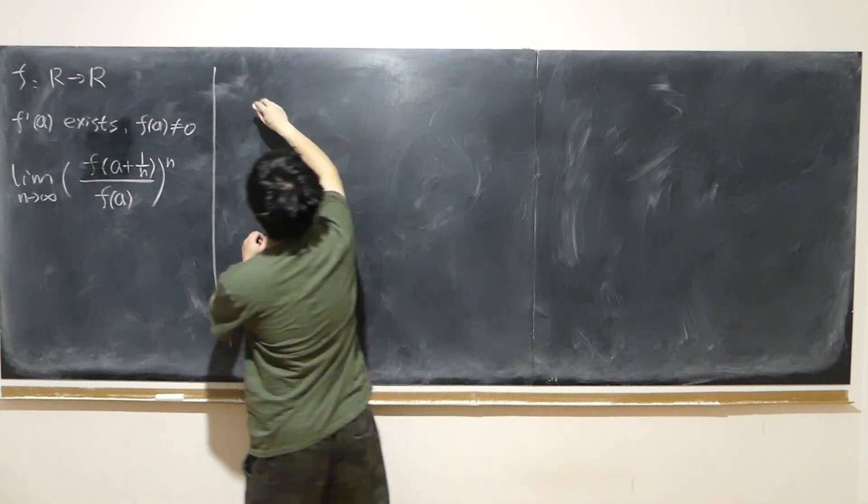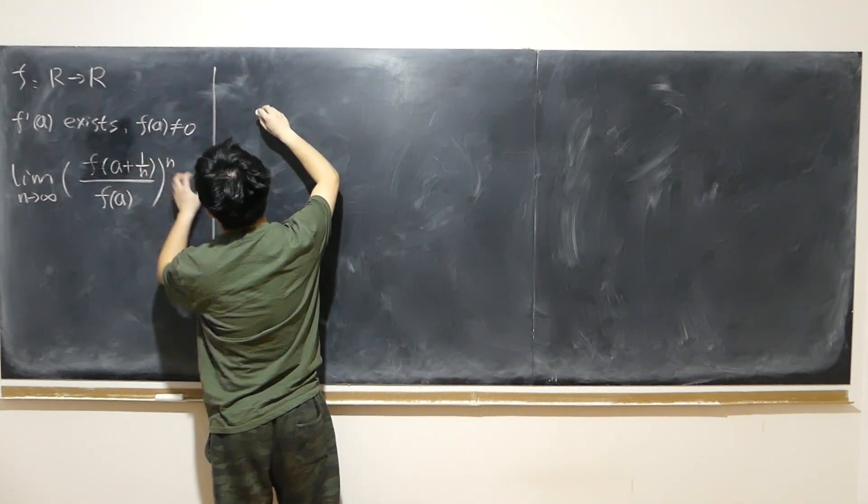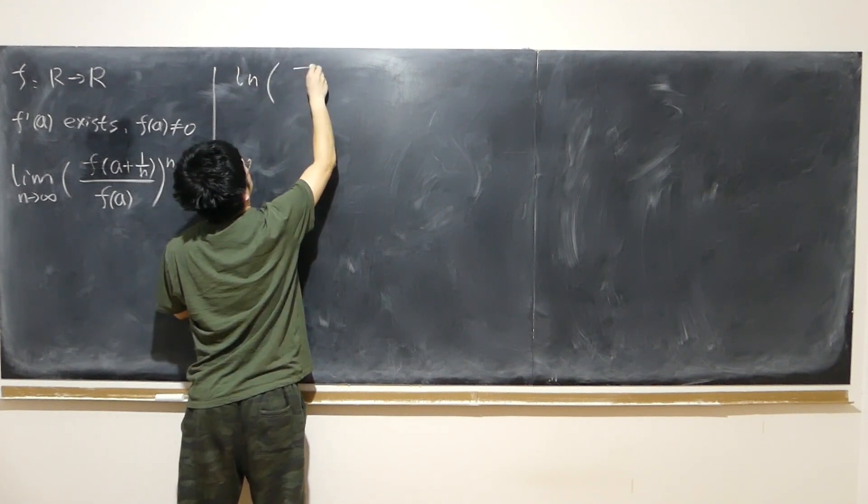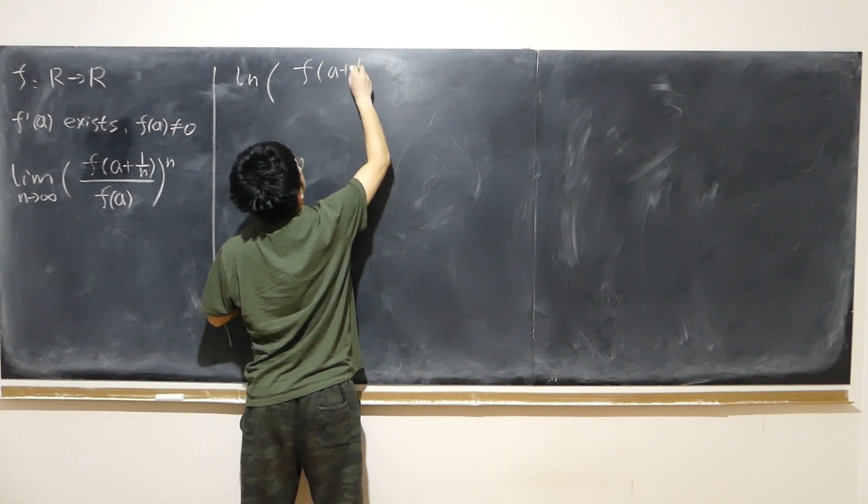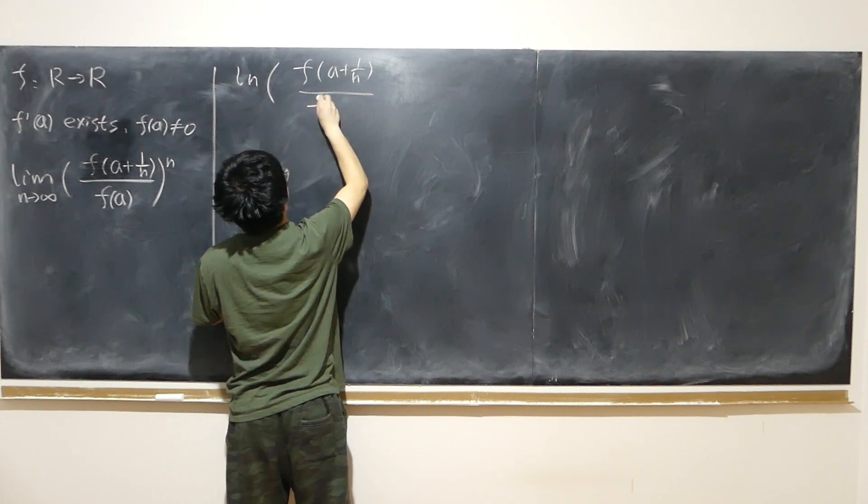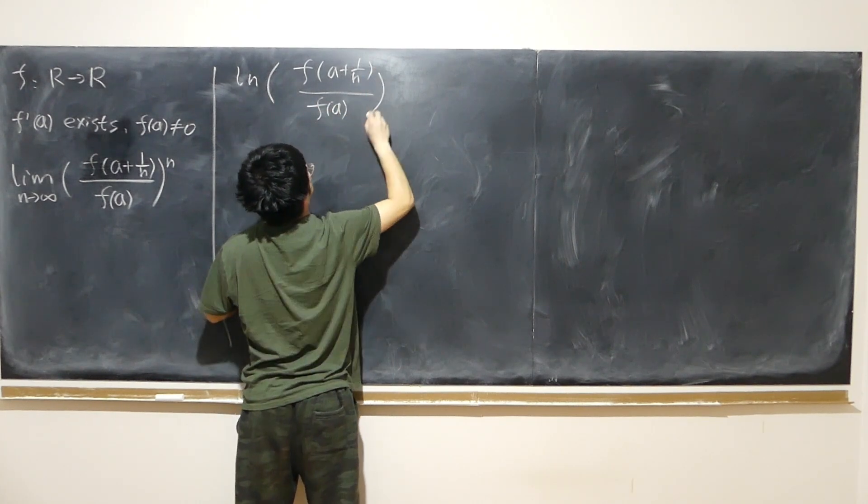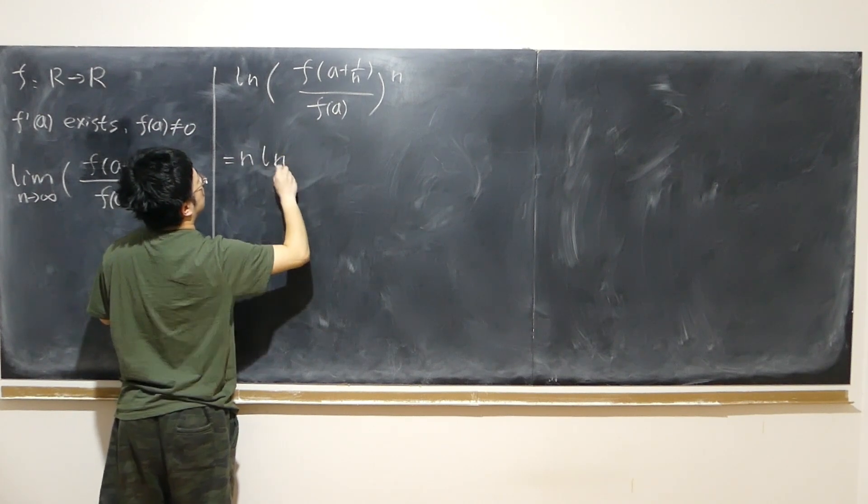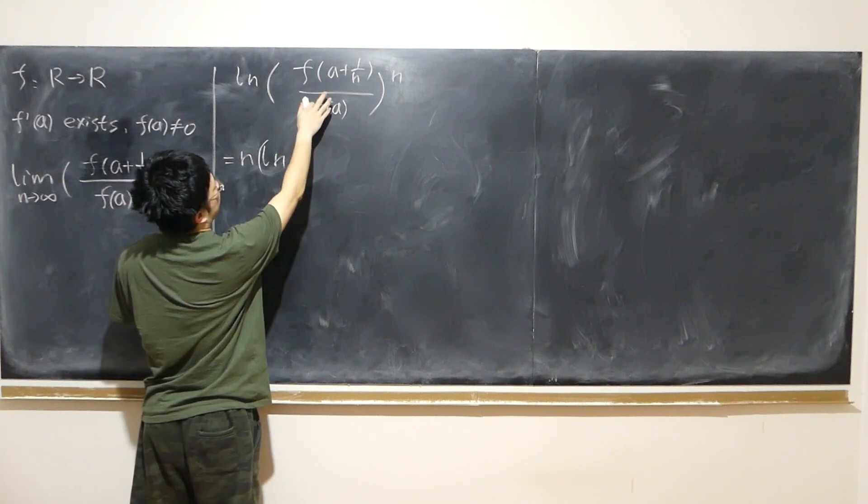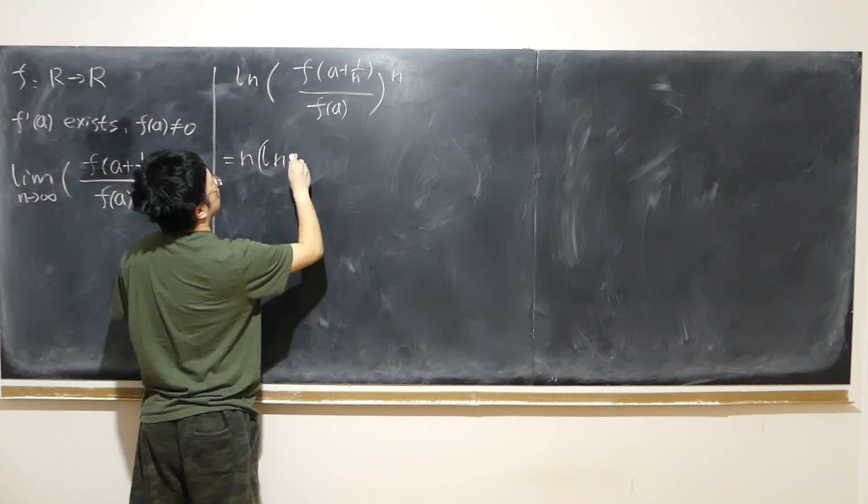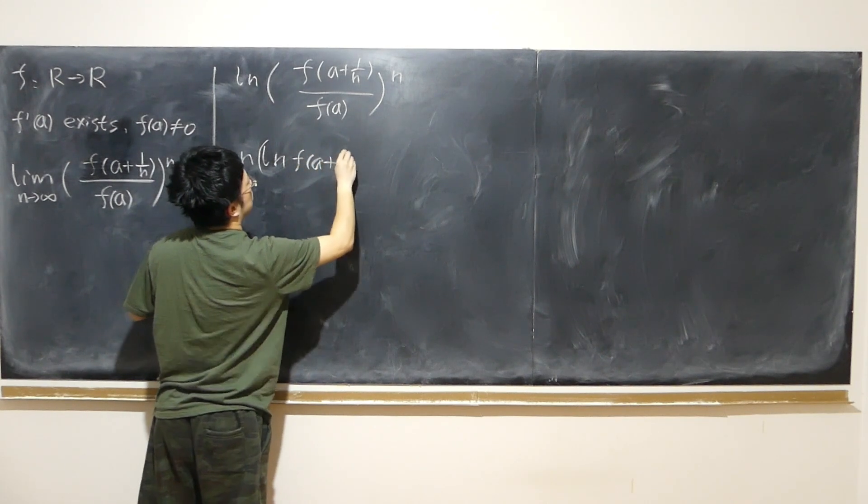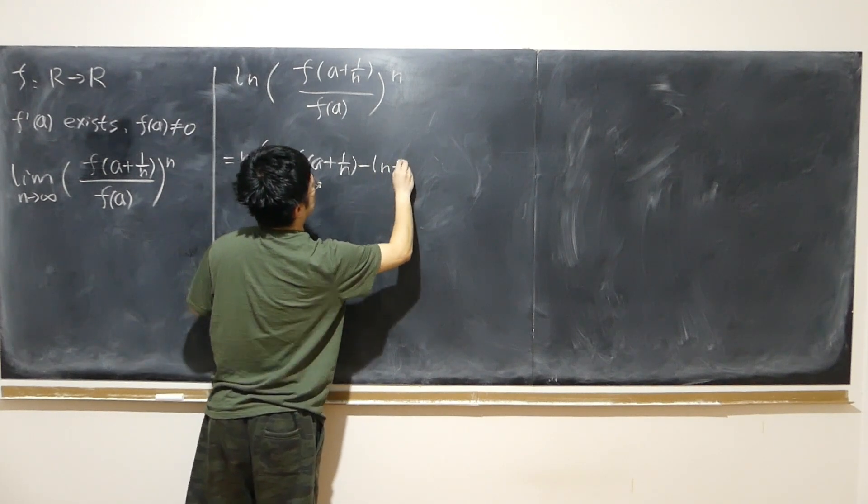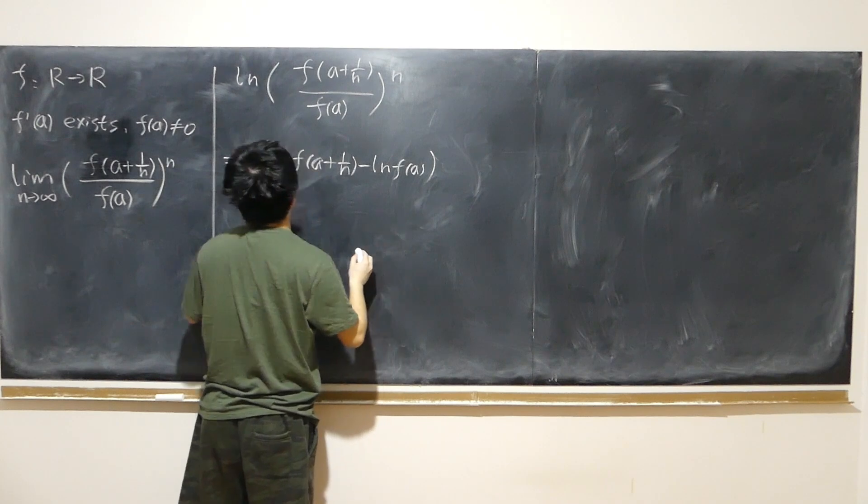First of all, we take the logarithm because it has the power of n. So log of (f(a+1/n)/f(a))^n equals n times log of, of course, log will have quotient, right? We take the difference of logarithm. So log of f(a+1/n) minus log of f(a).